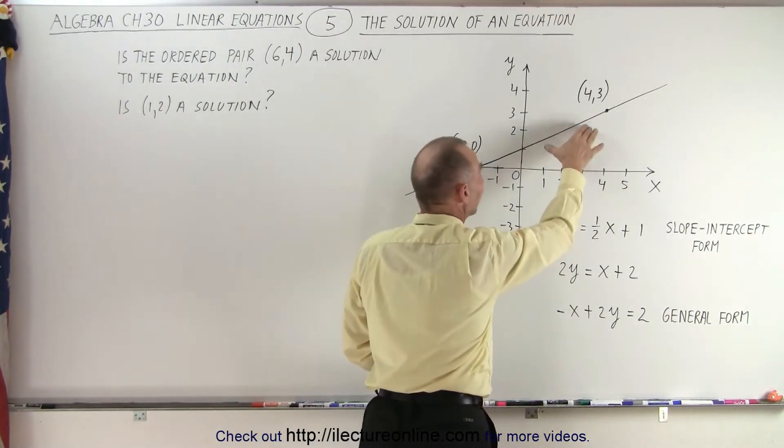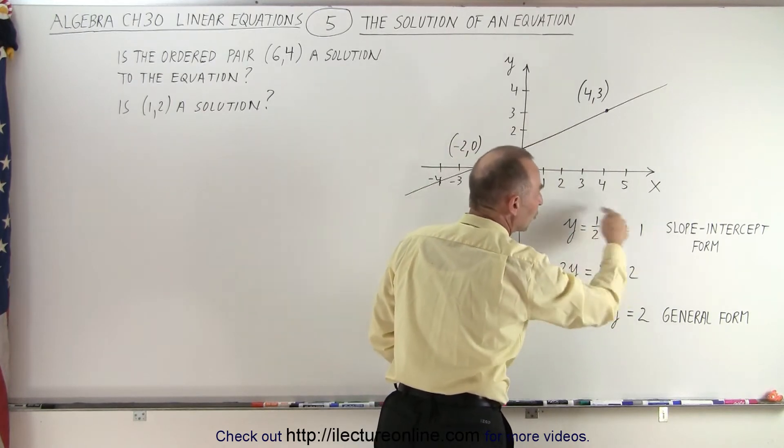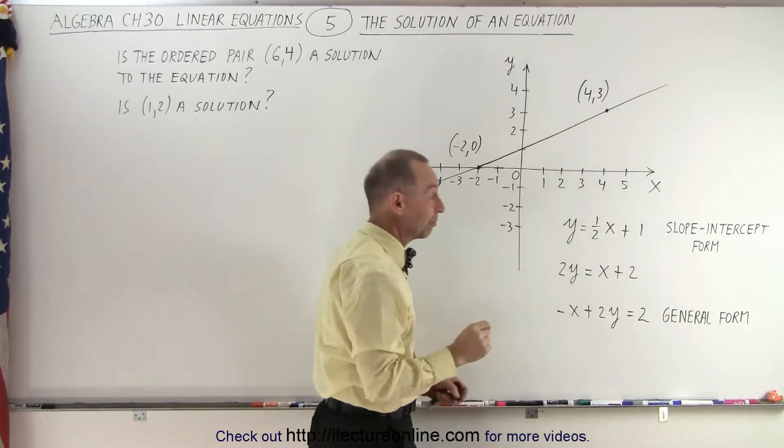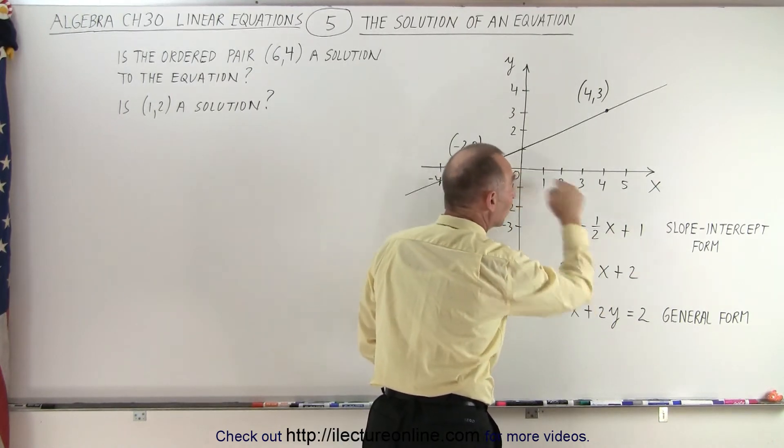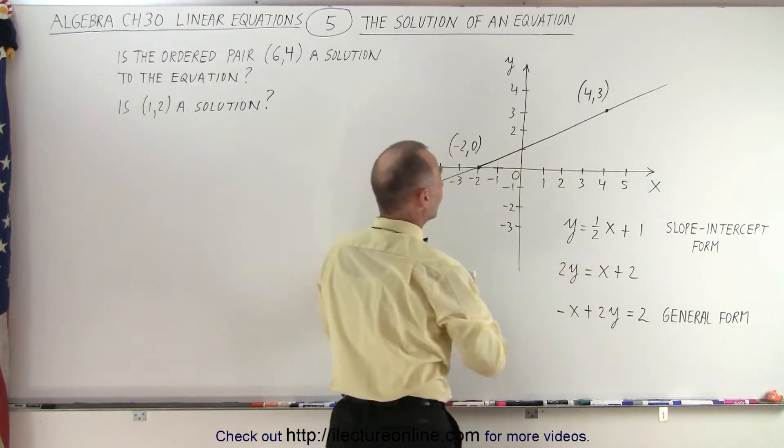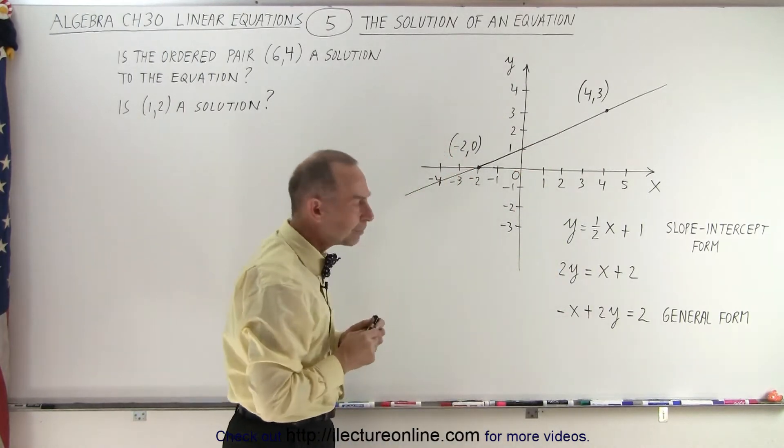Now, we haven't shown you yet how to take this line and turn it into this equation. Notice that this equation is what we're calling the slope-intercept form. The one-half is the slope, and the one is the point where the line crosses the y-axis. You can see here that it crosses where y equals 1.